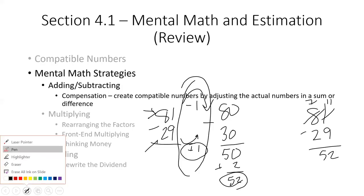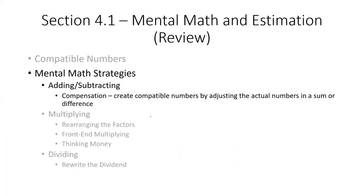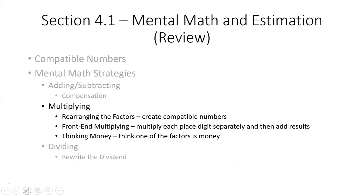I'm going to clear this screen and let's move on to multiplying. So when we're multiplying and we're looking to do mental math, there's three different ways that we can do this. We could rearrange the factors, we can do front-end multiplying, and we can think of them as if they're money. Let's go ahead and do a couple different problems here. I'm going to look at rearranging the factors first. If we're rearranging the factors, let's say that we're looking at a problem like seven times five times nine times two.